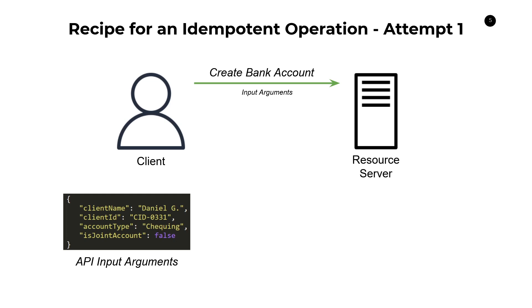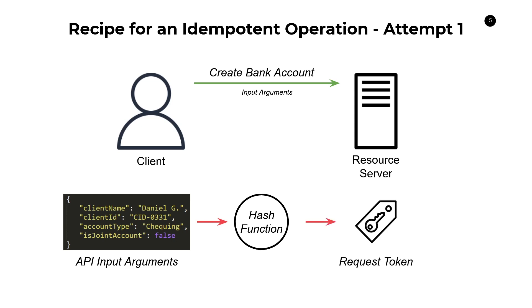On the resource server side, we take those API input arguments, throw them through a hash function, and produce a request token — a UUID or any other hash output. We store that token in some kind of internal database, maybe a cache on the server. The first time we get this request, the server takes the input arguments, hashes them, produces a token, stores it, and services the request. If we get another request due to a failure, we check the state store to see if we already have a copy of that token, and if we do, we don't create two different accounts because this request is correlated with the previous one.